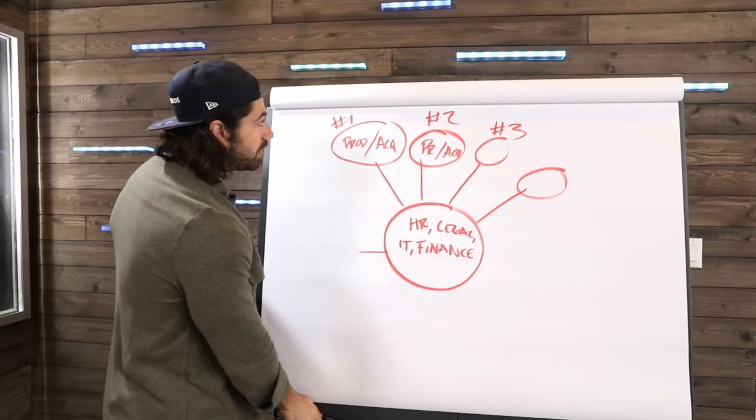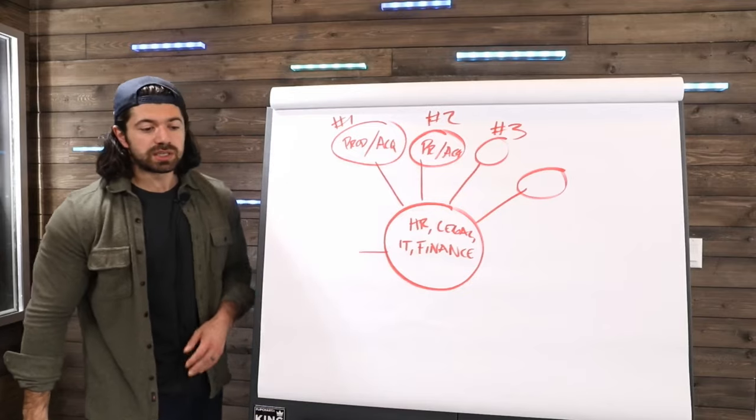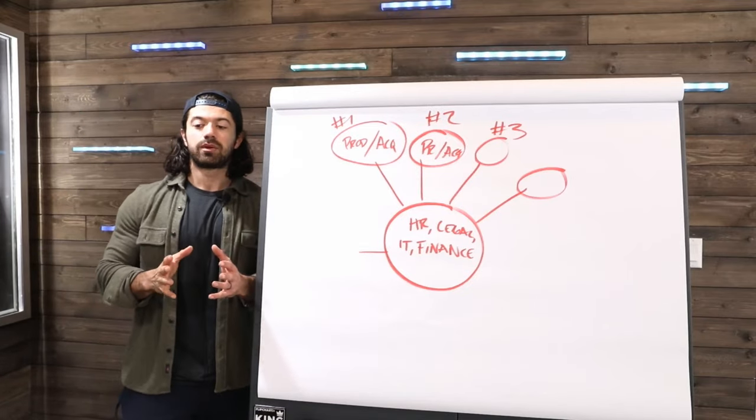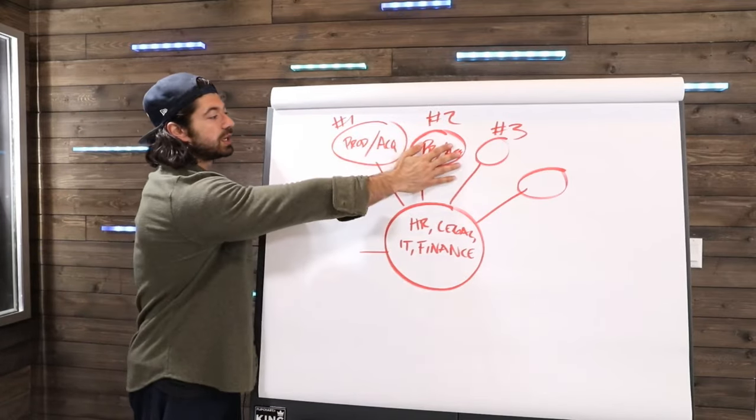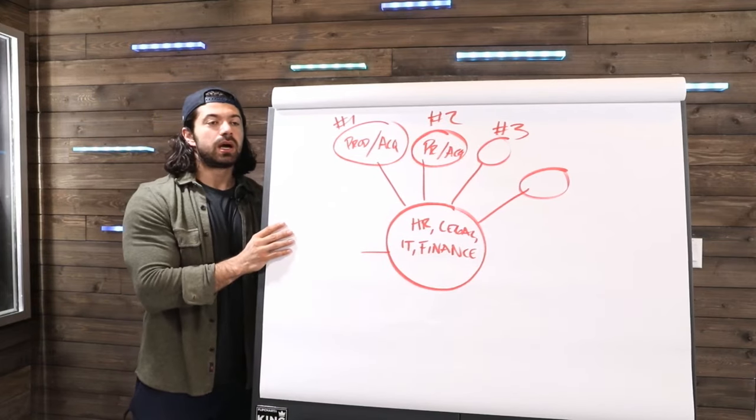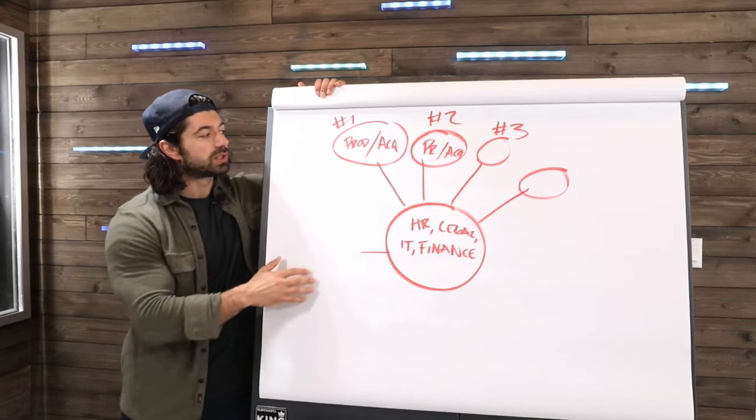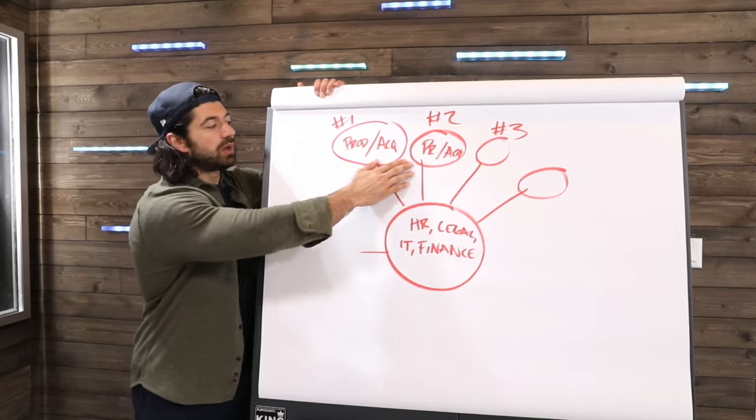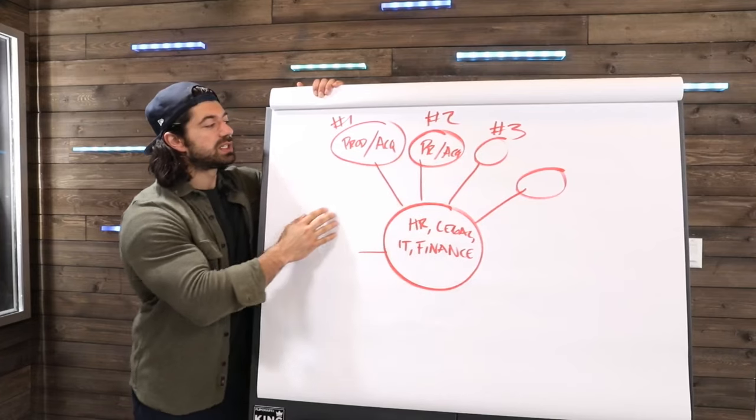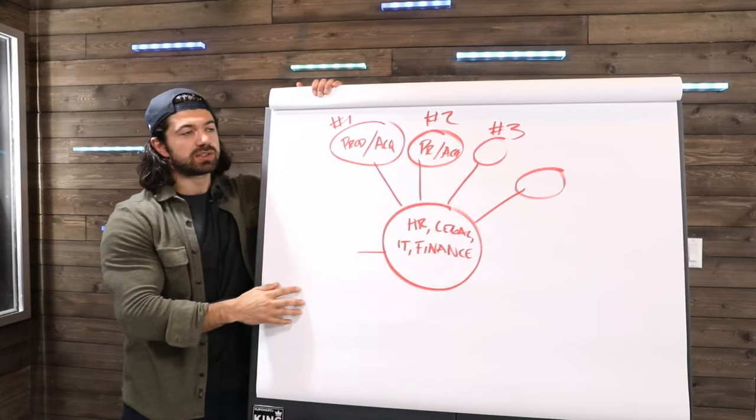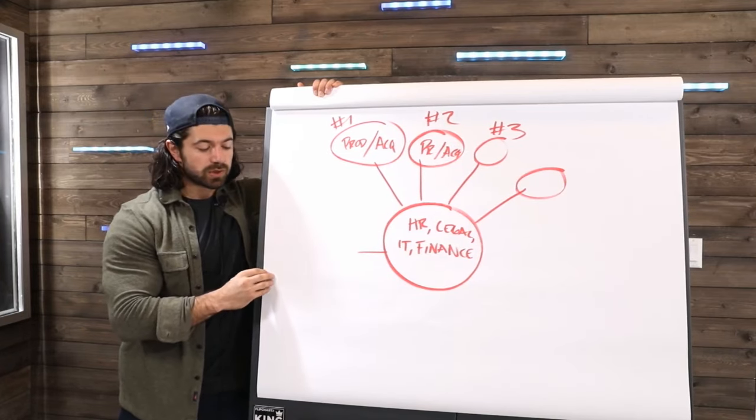Ideally, when you're enumerating these product lines is you want to use the existing resources that you have and capital and infrastructure to create products that are similar but different. For example, obviously we have a coaching business for gyms.